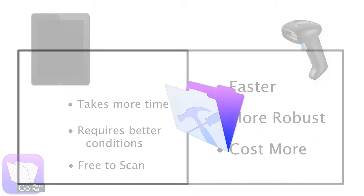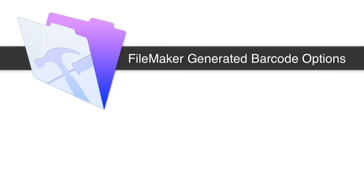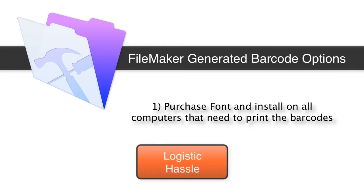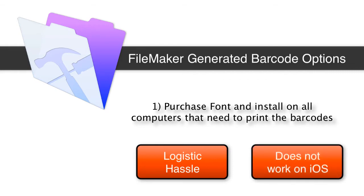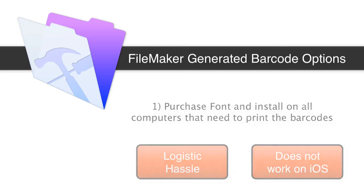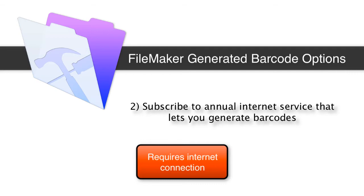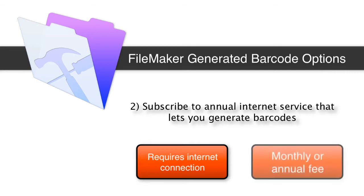For generating barcodes in FileMaker, you have several options. You can purchase a font and install it on all the computers that need to print barcodes, though this can be logistically a hassle and only works on Windows or Mac — not iOS devices, since you cannot install fonts manually on mobile devices. You can also pay for an annual subscription to an online service which generates barcodes when you're connected to the internet, but this requires an internet connection and your data is sent to a remote server, plus you pay monthly or annually.